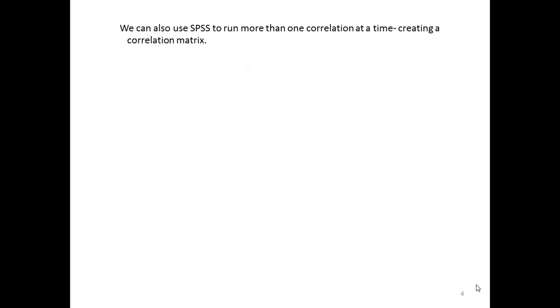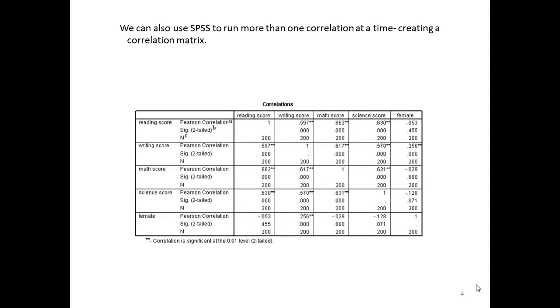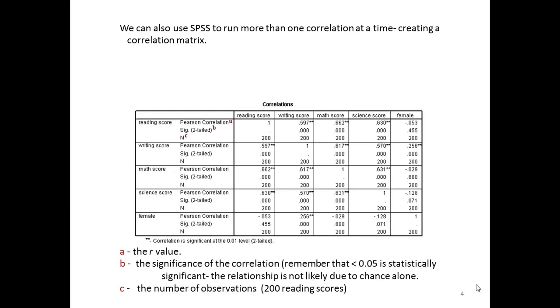We can also use SPSS to run more than one correlation at a time. This creates a correlation matrix, and you're going to get a chance to do this later on this semester. So here's an example of an SPSS output if you were going to try to correlate several scores in different disciplines to each other.